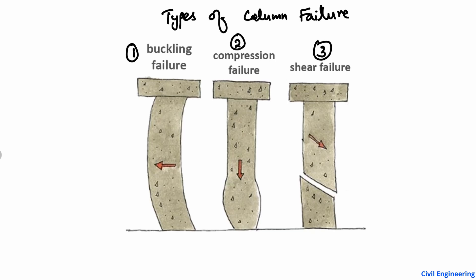Starting with buckling failure — buckling failure can be defined as the failure when the column is subjected to lateral deformation. For example, consider any column with a fixed support and a load P acting on it. When this load increases and the height H of the column is too high, the column can buckle.